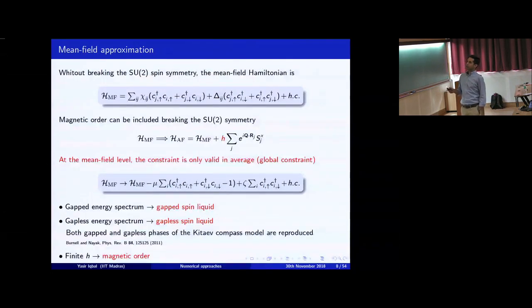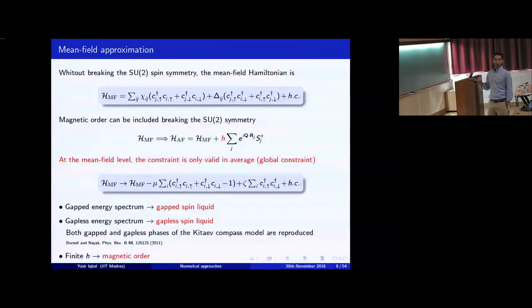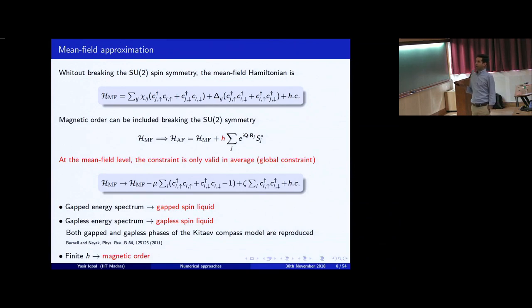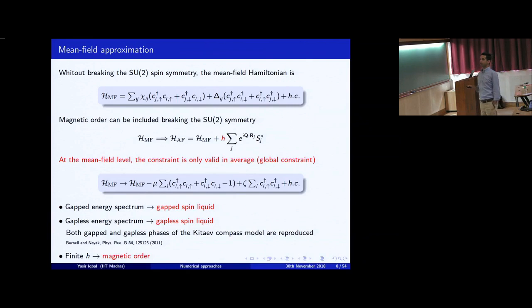Without breaking the SU(2) spin symmetry, when you rewrite the spins in terms of fermions you get a four-fermion interaction, and you can do a mean field decoupling to get hopping amplitudes χ and pairing amplitudes Δ. This is a purely SU(2) invariant problem. These χ's and Δ's are not gauge invariant, but they are not physical observables. This kind of mean field Hamiltonian starting from a Heisenberg model cannot capture magnetic order.